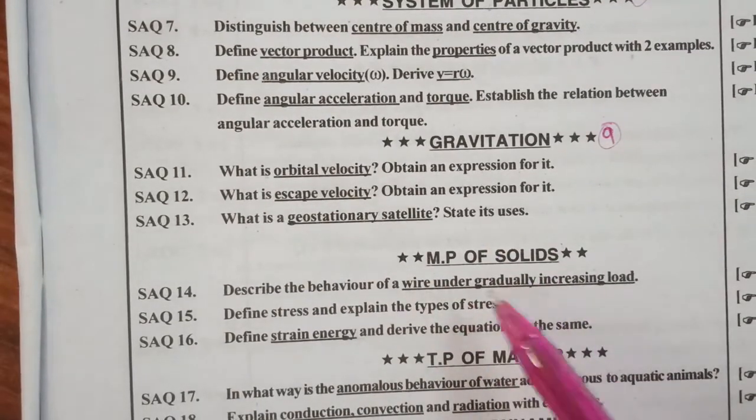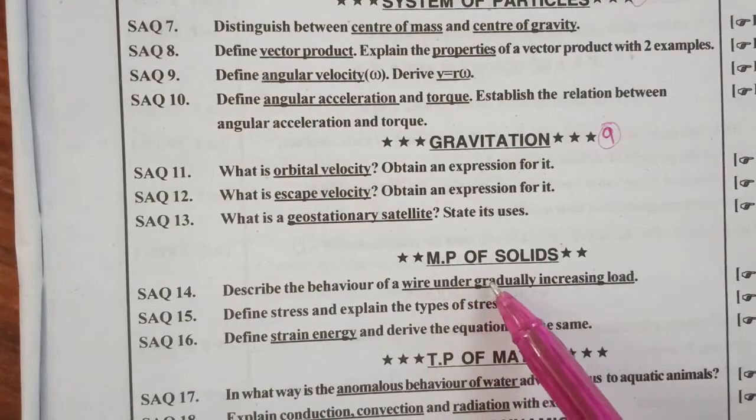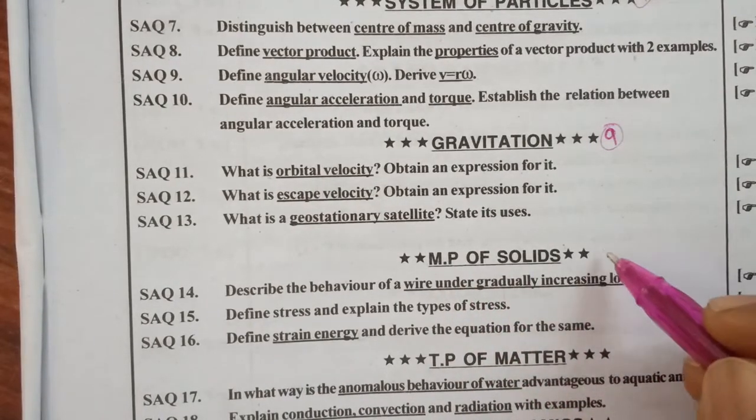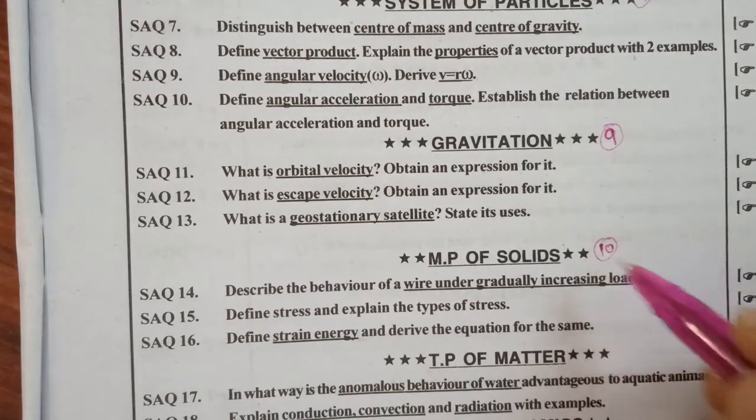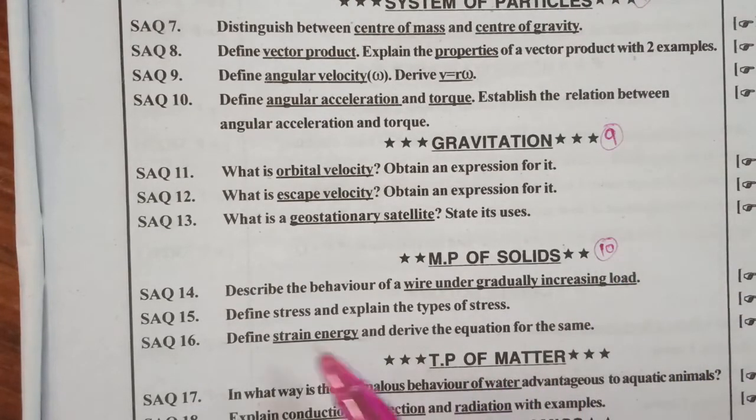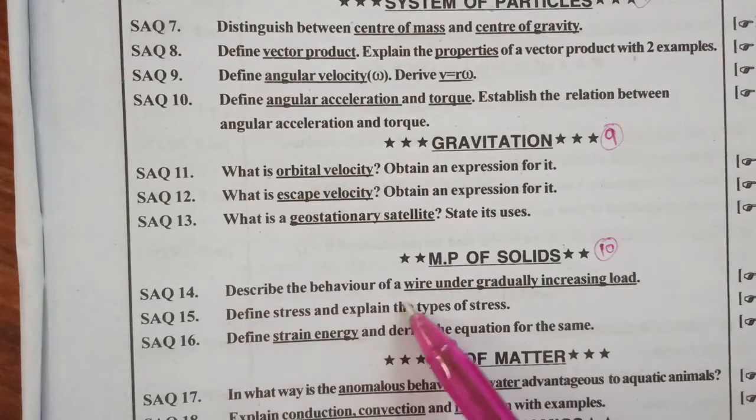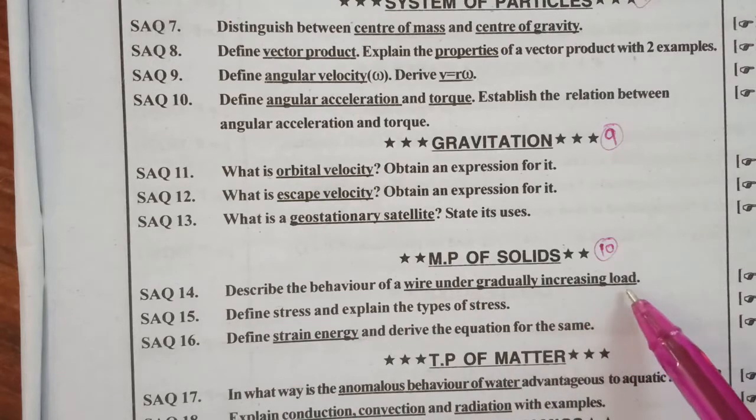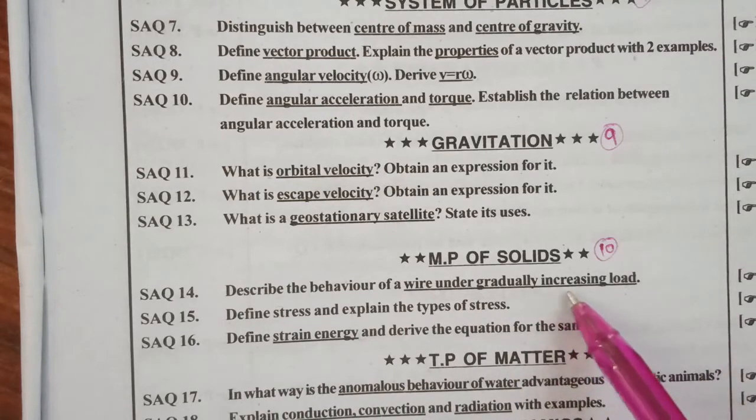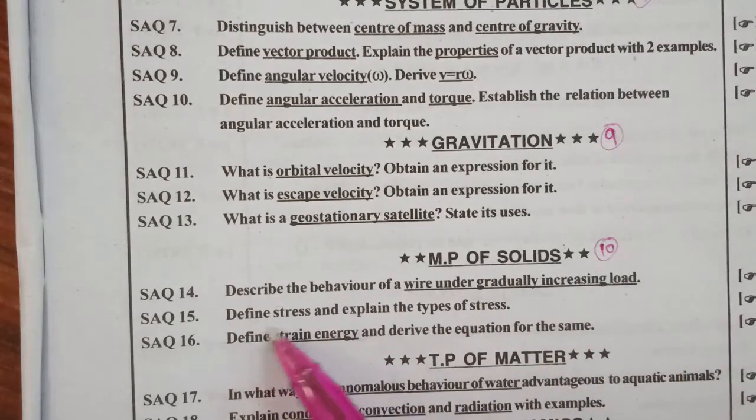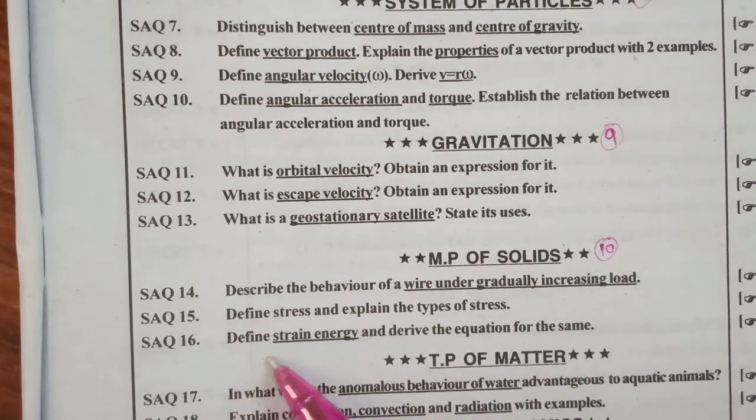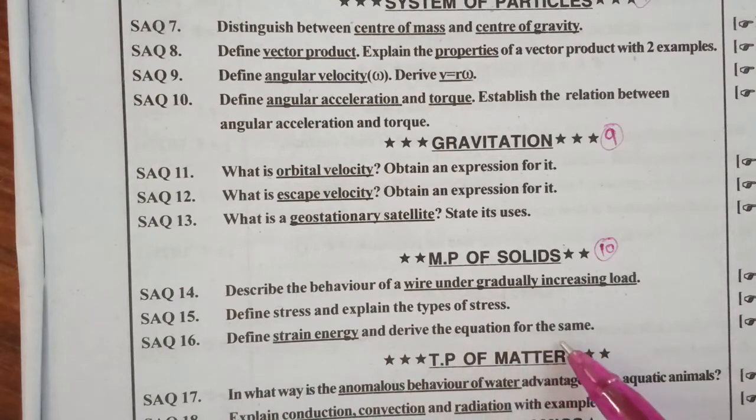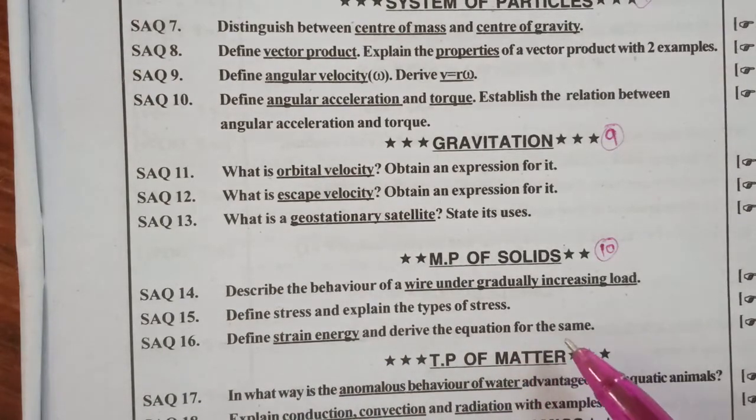MP of solids, mechanical properties of solids. This is 10th chapter. Three are most important. Describe the behavior of wire under gradually increasing load. Define stress and explain the types of stress. Define strain energy and derive the equations for the same.